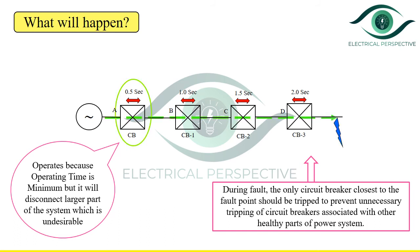What is desirable is that during a fault, only the smallest possible part of the system should get isolated. Here the fault is occurring beyond point D, near the load end, but the relay operating is the one nearest to the generating station because it has the lowest operating time. So this is not desirable, and we cannot grade the protection system in this manner — that is, with lower time setting near the generating station and increasing operating time towards the load.